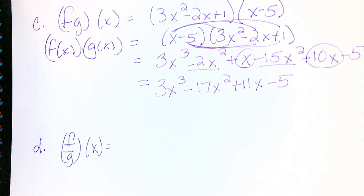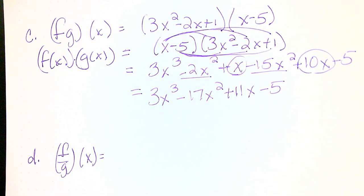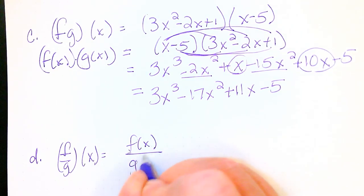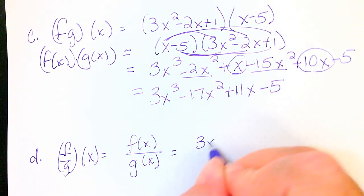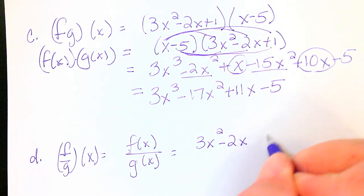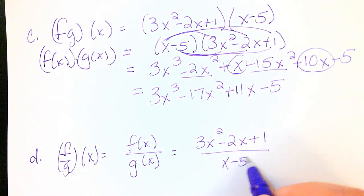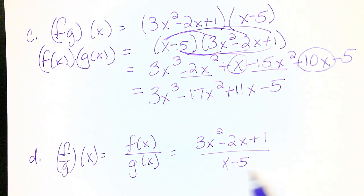Now let's look at dividing. When I divide, I'm going to have f(x) divided by g(x). This is going to give me (3x² - 2x + 1)/(x - 5). Now you can certainly try to factor the top here. Even if it factors, there's no factors of 3 that are going to cancel with 5. So this would be our answer.